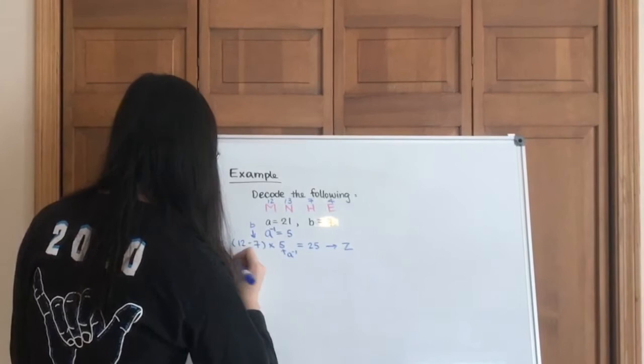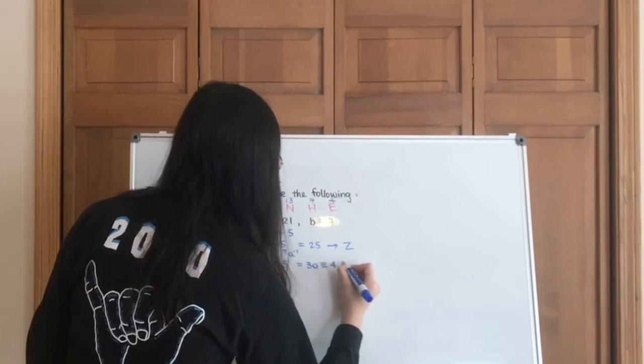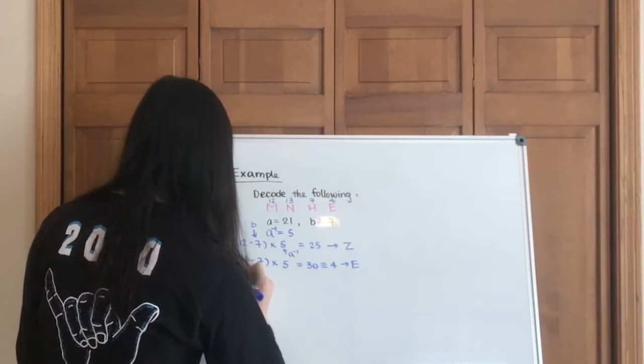Let's do N. So same thing, 13 minus 7, the b, multiplied by inverse of a. So that is 30, which is 4, and that gives us E.